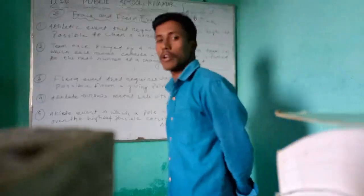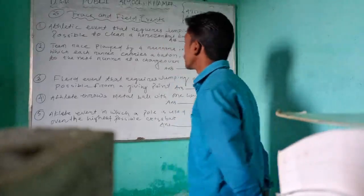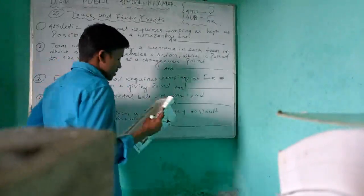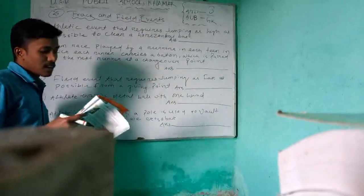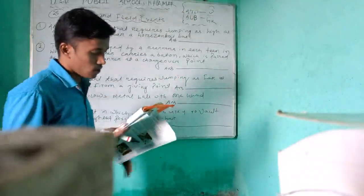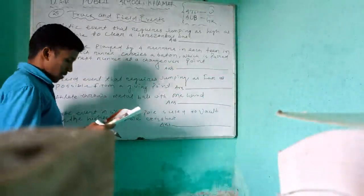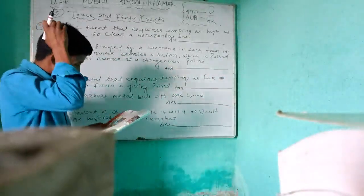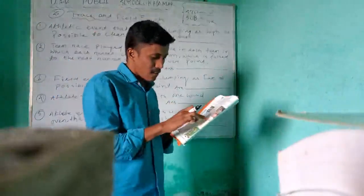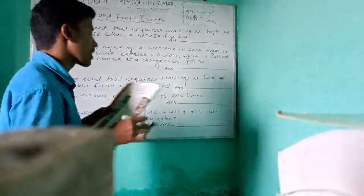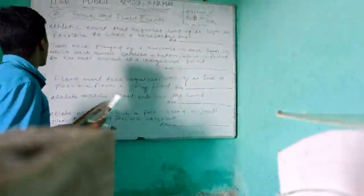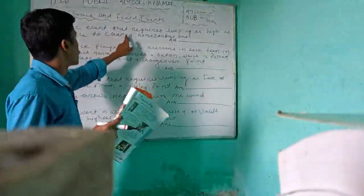Our chapter 25 is based on this idea — track and field events. The question says: read the following descriptions related to the track and field events and write the answer in the space provided. There are a number of options to answer.